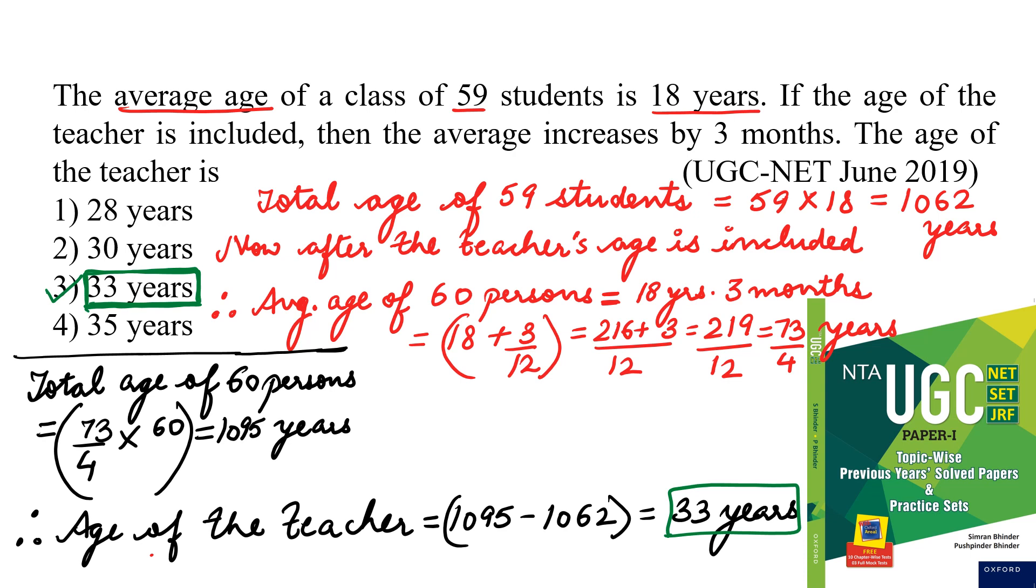So where the average age was 18 years given in question, the average age is increasing by 3 months, that's why I have written over here 18 years 3 months. So now 3 months is given here, so we are converting it into years. You can easily see, 18 plus 3 by 12, when we solve this, this becomes 73 upon 4 years. Now what has been asked in the question, we will proceed according to that. Total age of 60 persons, we can calculate - average age into number of persons. Average age we have just calculated, that is 73 upon 4 into number of persons 60. So, total age of 60 persons comes out to be 1095 years. Therefore, age of the teacher is equal to 1095 minus 1062 is equal to 33 years.